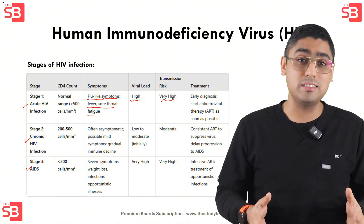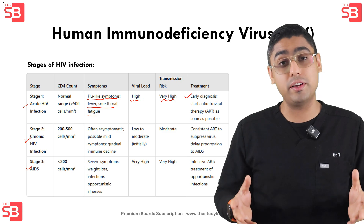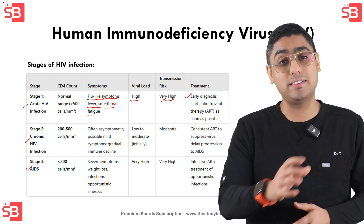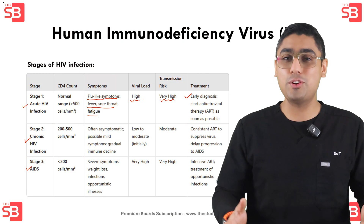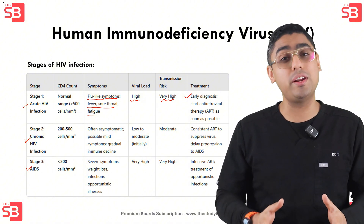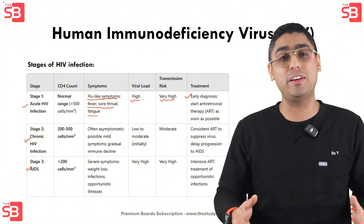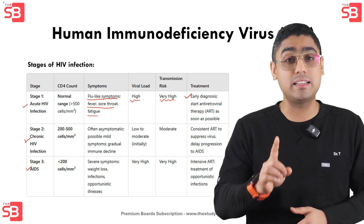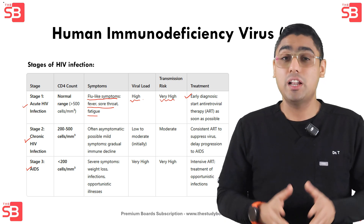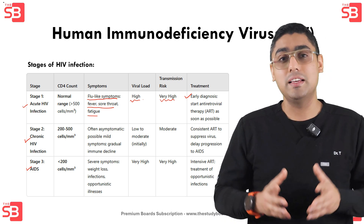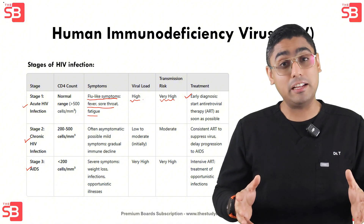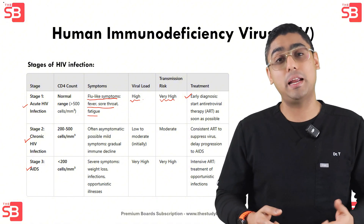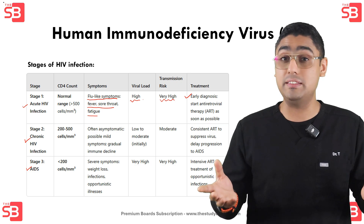Early diagnosis and the start of antiretroviral therapy — that is ART — is essential at this stage. The second stage is chronic HIV infection. There is an important word that you need to remember: clinical latency. In this phase, the virus remains active but replicates at lower levels.